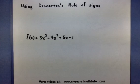Hello and welcome to My Secret Math Tutor. In this example, I want to show you how you can use Descartes' rule of signs in order to figure out just a little bit more information about the possible zeros that your polynomial might have.